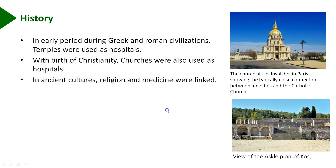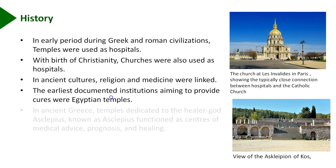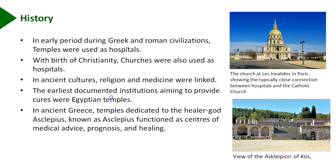In ancient cultures, religion and medicine were linked. The earliest documented institutions aiming to provide cures were Egyptian temples. In ancient Greece, temples dedicated to the healer god Asclepius functioned as centers of medical advice, prognosis and healing.